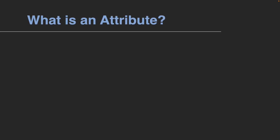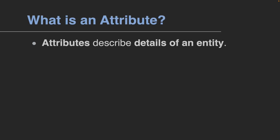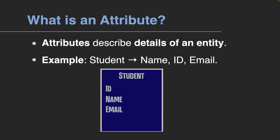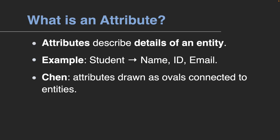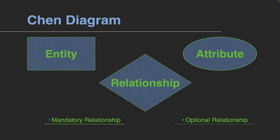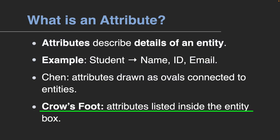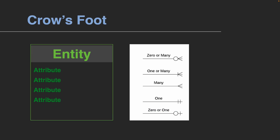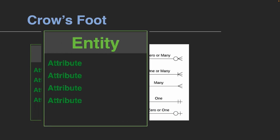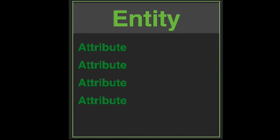Next, we have attributes. Attributes describe the details of an entity. For example, a student might have a name, an ID, and an email address. In Chen notation, attributes are drawn as ovals connected to the entity rectangle. In Crow's Foot notation, attributes are usually listed directly inside the entity box instead of being drawn separately.